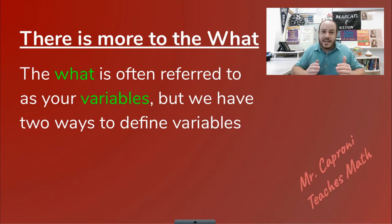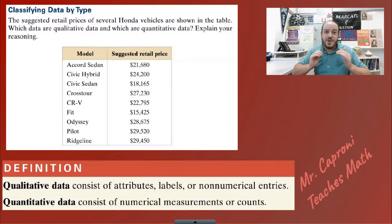What's special about the what is we refer to it as a variable in statistics. Variables take two major forms: they're either qualitative or quantitative. You can find the official definition below, but I like to put them in simpler terms. A quantitative variable is anything that deals with a number that is measuring something.